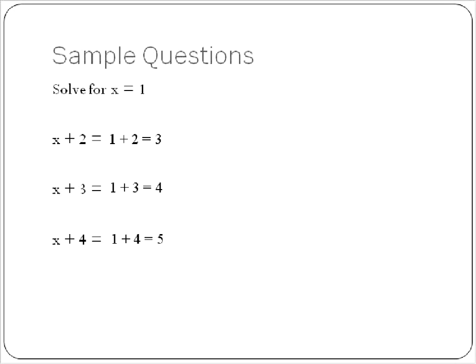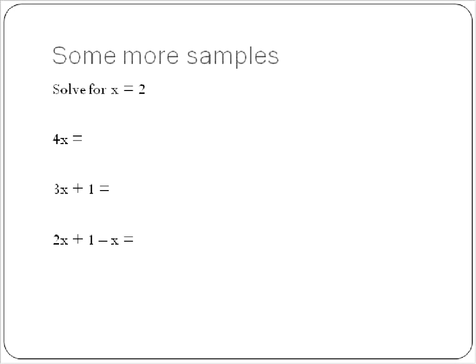Let's look at some questions that are a little bit more challenging. When you have a number right next to the variable x, when you substitute in that value of 2 right in there, it is implied that you are actually multiplying those two numbers. So this is like saying 4 times 2, and it can be written with parentheses or with a dot in between the 4 and the 2.